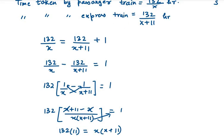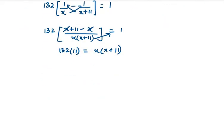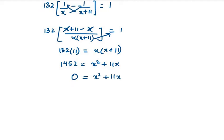We expand the brackets: 132 into 11 is 1452. x into x is x squared, and 11 into x is 11x. Moving 1452 to the right-hand side gives us the quadratic equation: x squared plus 11x minus 1452 equals zero.